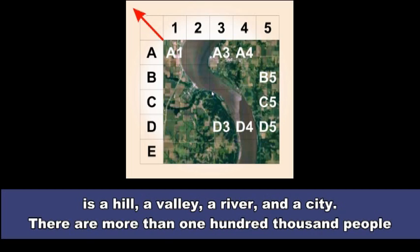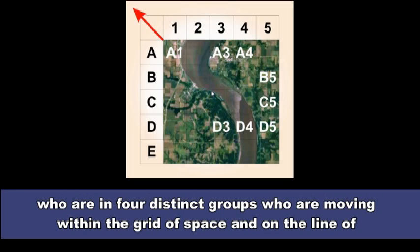There is a hill, a valley, a river, and a city. There are more than 100,000 people who are in four distinct groups who are moving within the grid of space and on the line of time. The requirements of the story are so clear.